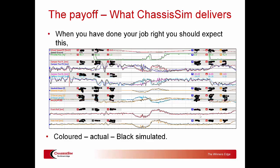So why bother with this? Here's why. When you've done your job right, this is the correlation you should expect. Actual data is coloured, black is simulated. We have speed, throttle, front dampers, rear dampers, steer, lateral acceleration, inline g, front roll and rear roll. That illustrates the power you have with ChassisSim — and you are absolutely crazy if you leave home without this. Because once you get correlation like this, it allows you to make decisions based on fact rather than supposition, and it gives you the bedrock and confidence to know where to go with the car.